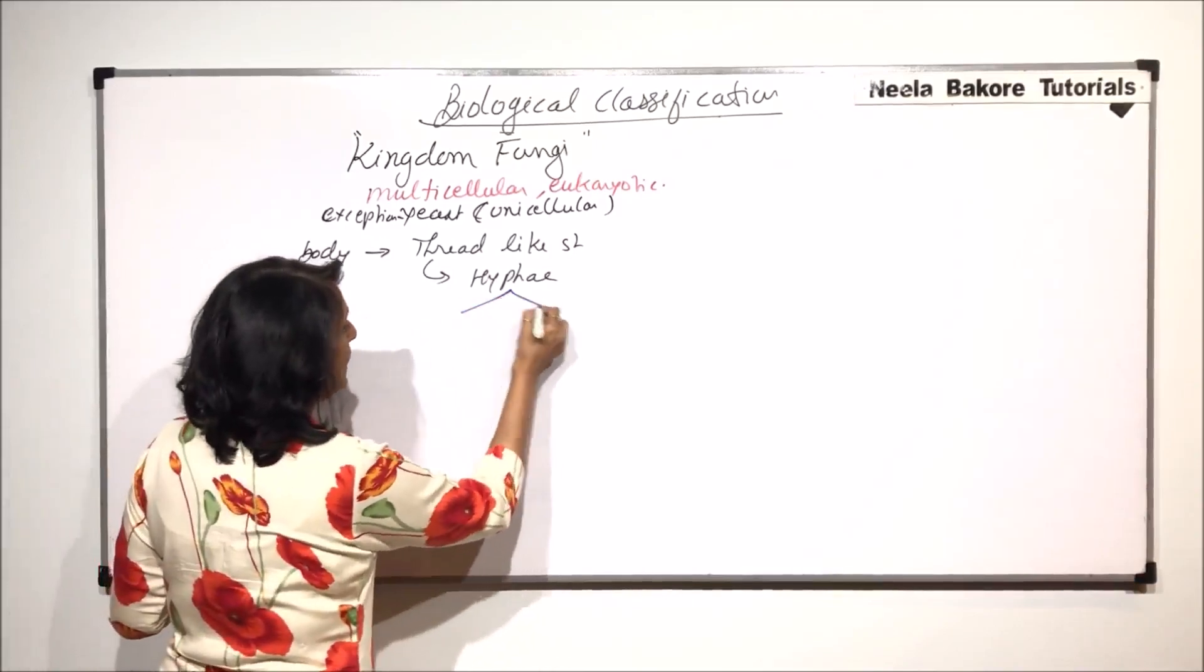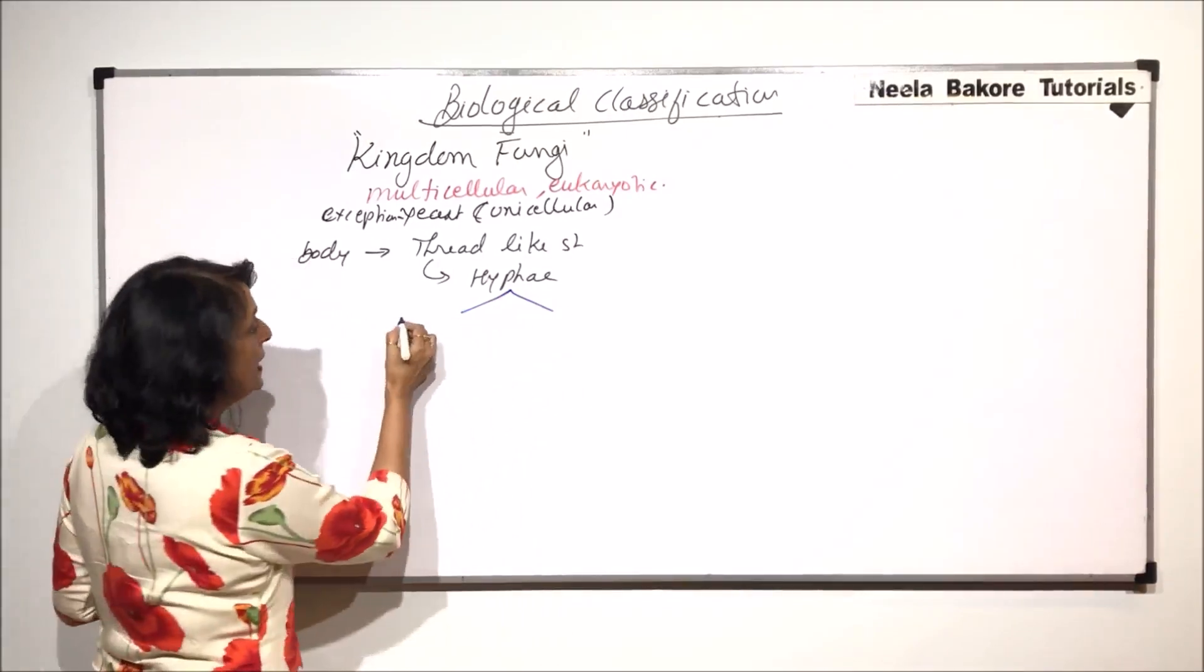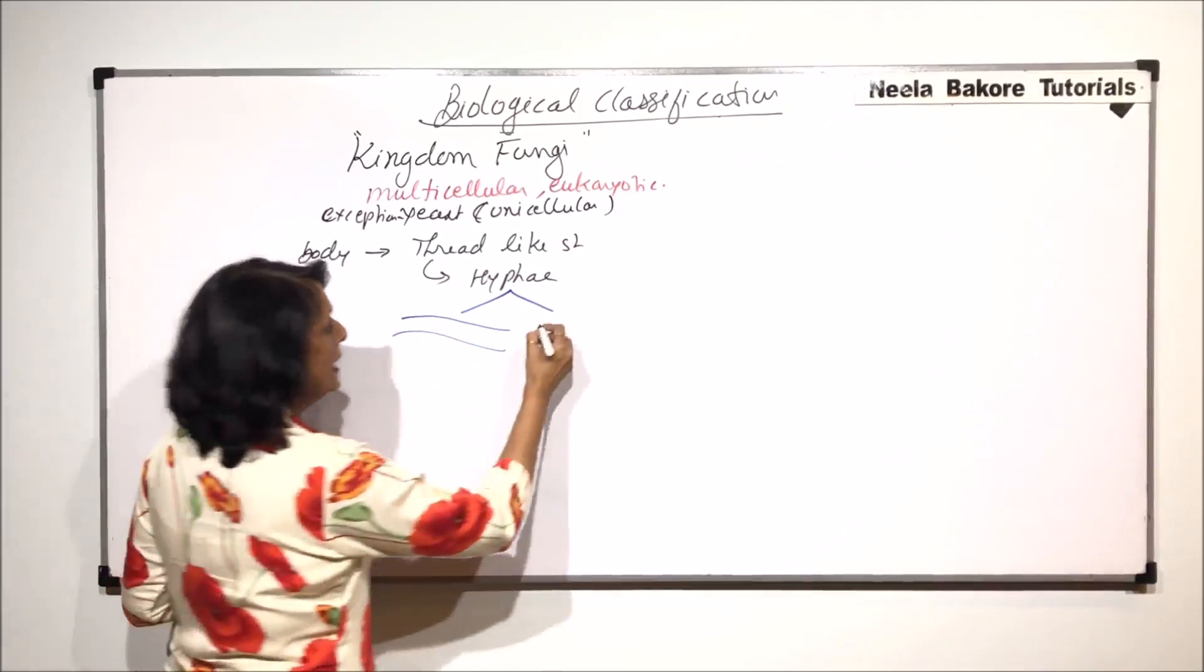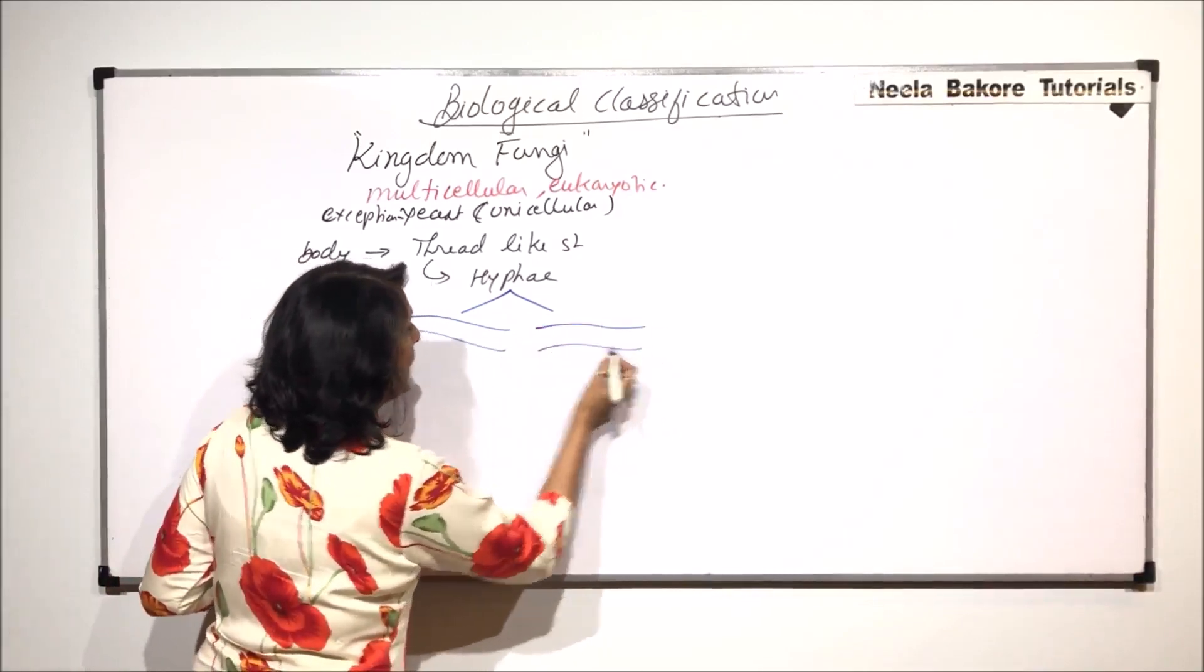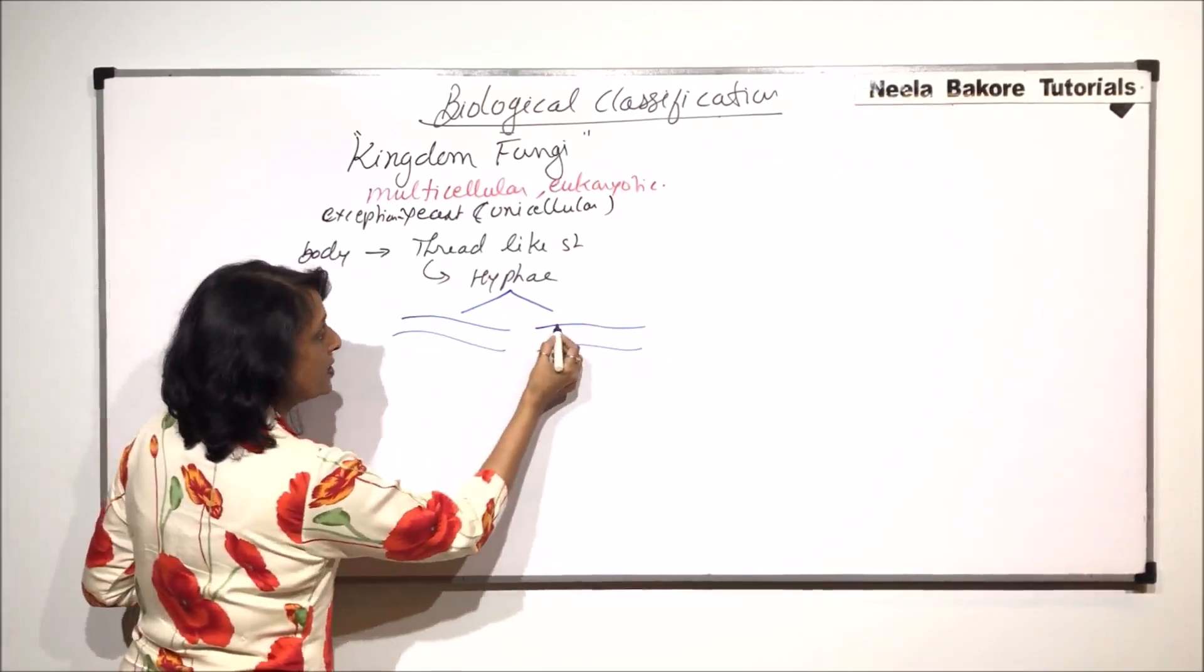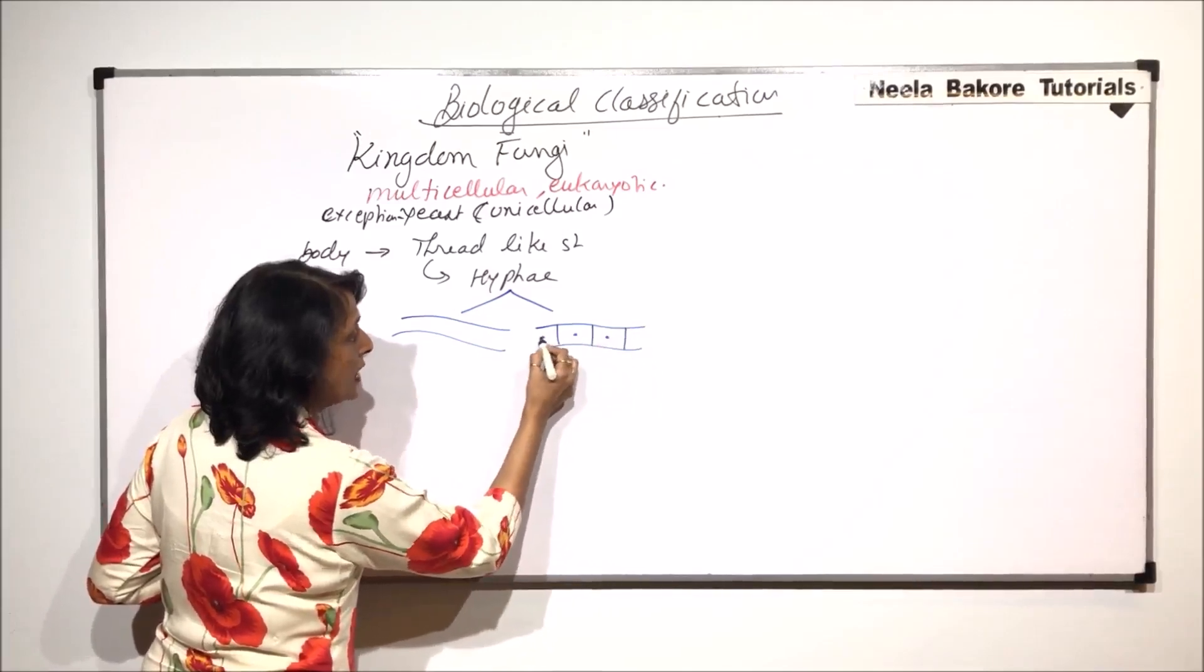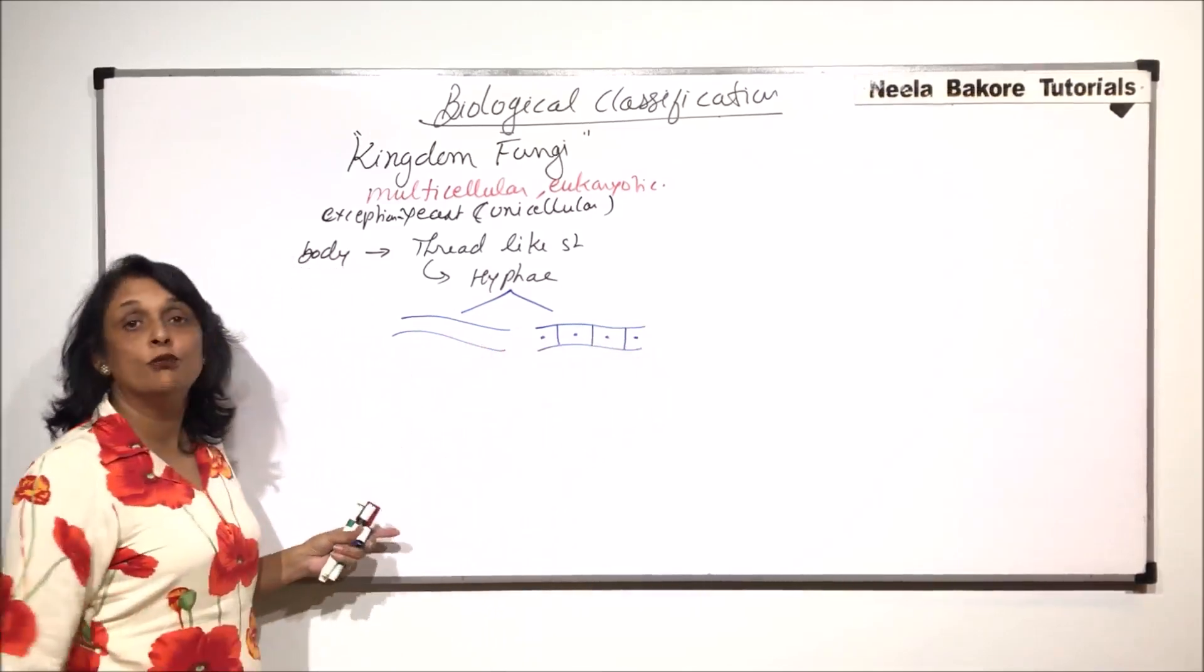So if we talk of septate and aseptate, what does it mean? Suppose this is one thread, this is the hyphae, here is one more, and this compartmentation is taking place because of formation of this membrane. So each compartment has a single nucleus.